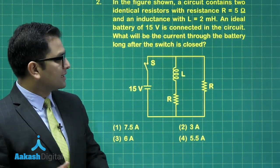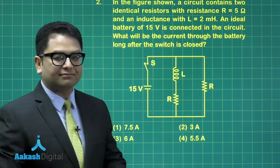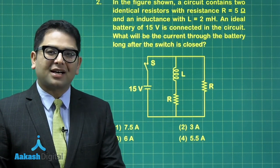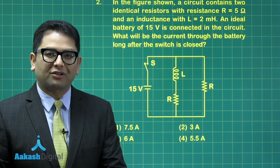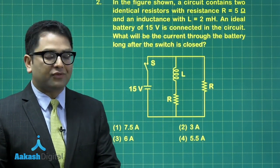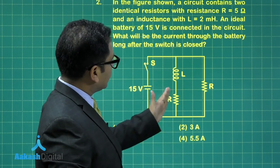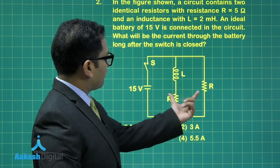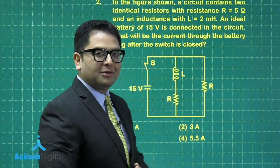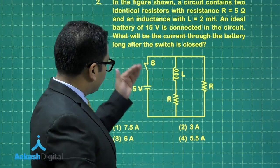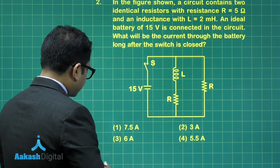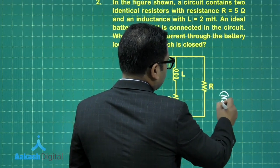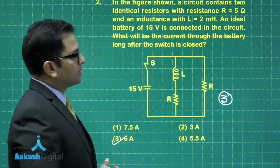What really happens is that this is short circuited, so these two resistances will be in parallel. They are five and five in parallel, that will be 2.5, and 15 divided by 2.5 will be 6 ampere. So option number three would be the correct option for question number two.